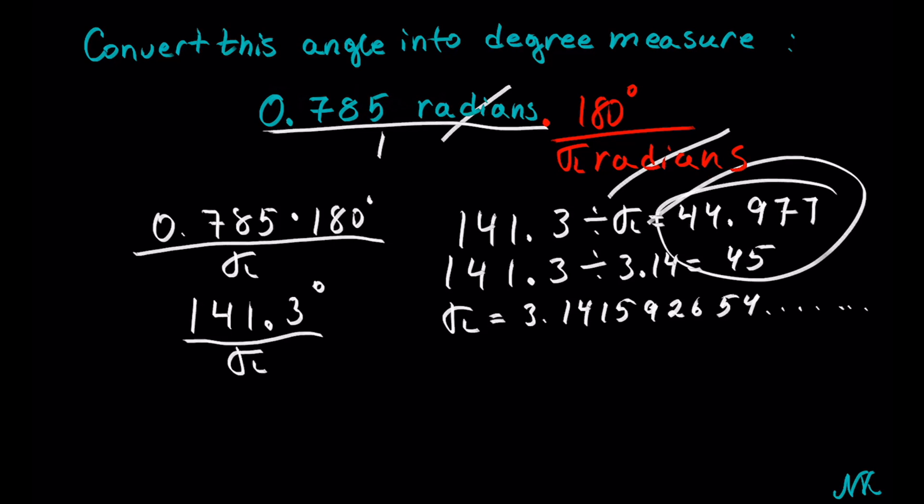But for the purposes of this example, let's say 141.3 divided by pi—usually we use 3.14 for pi—and we get the solution is about 45 degrees. And this will be our solution. That's all.